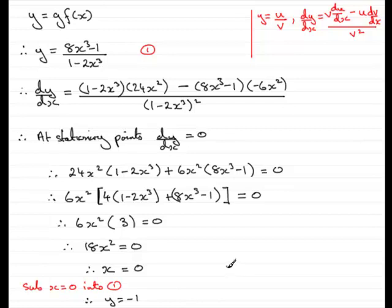So in conclusion, we have got therefore the stationary point is in fact the point with coordinates x is 0, y is minus 1. And that brings us now to the end of this question.